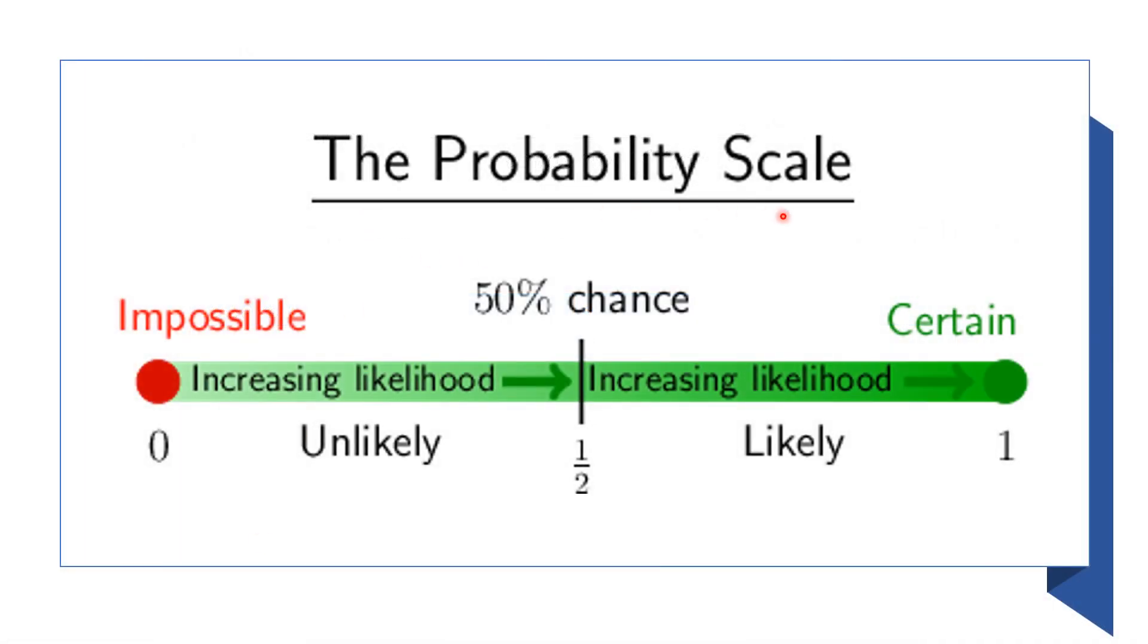The probability scale is a scale that ranges from zero to one. If the probability of an event is impossible, then we say that probability equals zero. If the probability of an event is certain, then we say probability equals one.